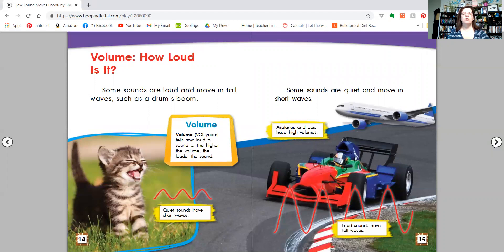So look, the kitty cat, I think that would be a short wave, right? Because they're pretty quiet. They just go meow, meow. Some sounds are quiet and move in short waves. So airplanes and cars have high volumes. Loud sounds have tall waves. So you've heard a loud car or a loud airplane. That is a tall wave.